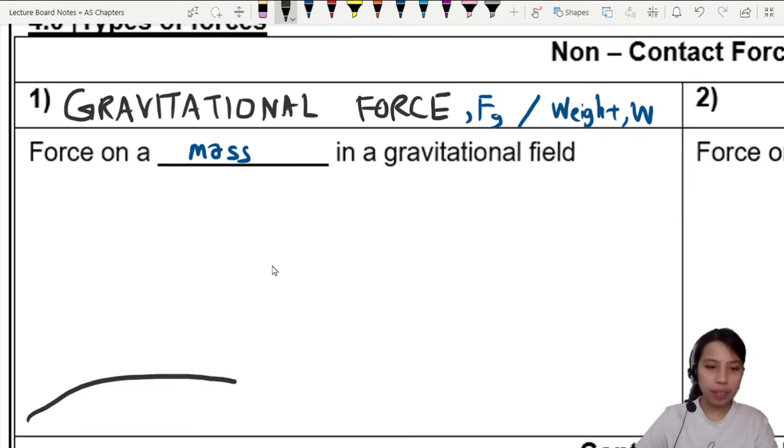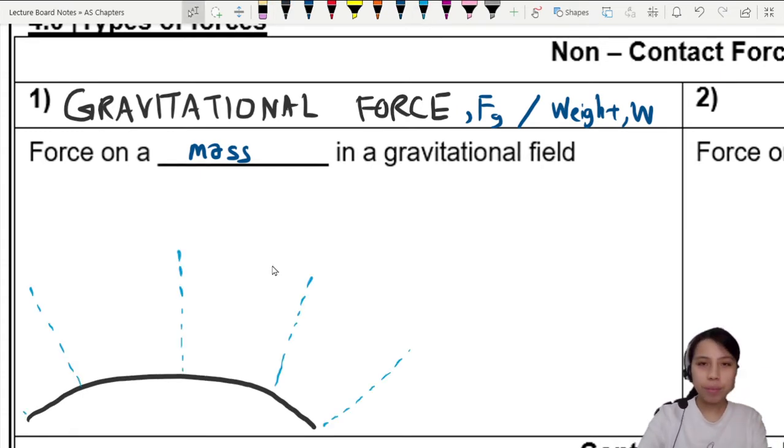What does the gravitational field mean? Imagine we are on planet Earth, it's kind of curved like that. Because Earth has mass, it has a field we affectionately call the G field, pointing downwards always towards the center of a big mass.